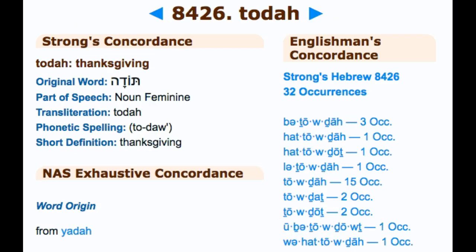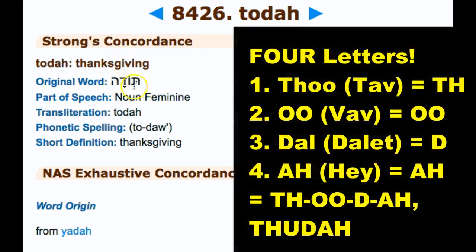Now we're going over more foundational words. Notice the difference between the restored language and so-called Modern Hebrew. In Strong's H8426, the word for thanks or thanksgiving — they say it's 'Toda,' but breaking it down we have four characters: Thu-U-Dal-He. That gives us Thu-Da, just like in Yahudah. So it's pronounced Thuda, not Toda.